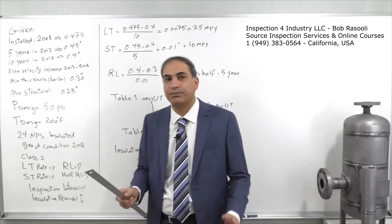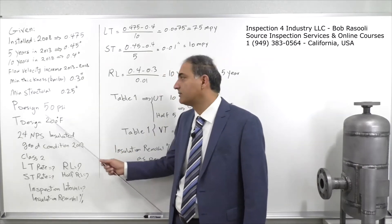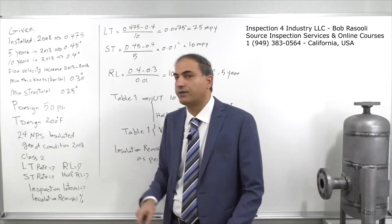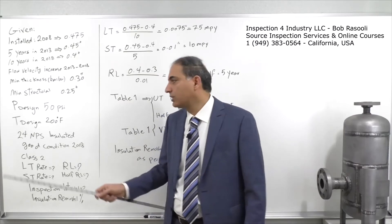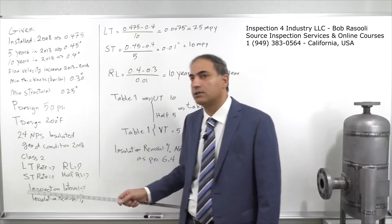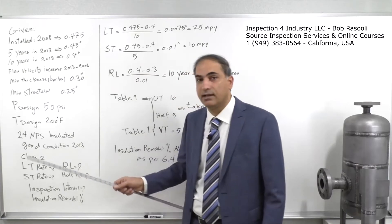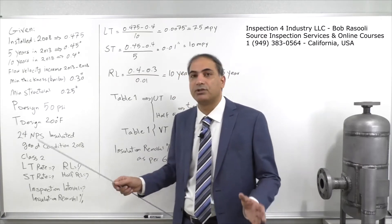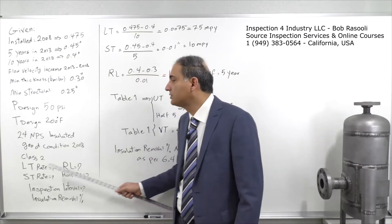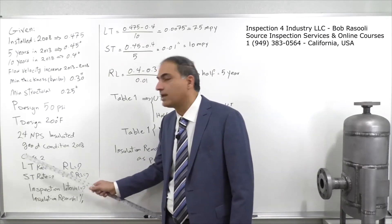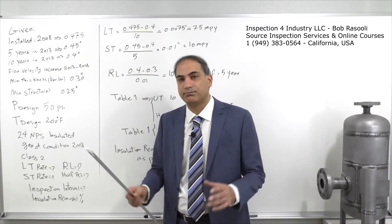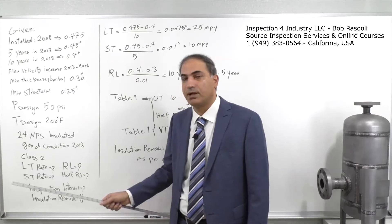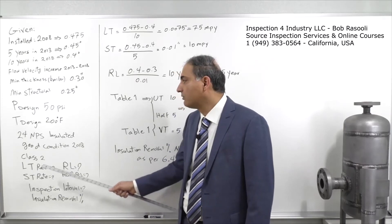The design pressure is 50 psi (a low pressure system), design temperature is 200°F, pipe size is 24-inch NPS. It is an insulated pipe seen in good condition based on the 2018 inspection, and it is categorized as a Class 2 pipe per API 570.